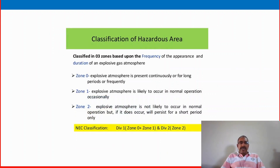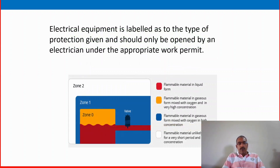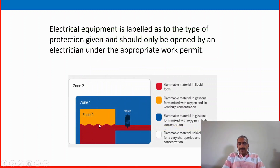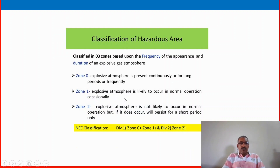Classification of hazardous areas: classified in 3 zones based upon the frequency of appearance and duration of an explosive gas atmosphere. Zone 0 — explosive atmosphere is present continuously for long periods. In Zone 0, explosive atmosphere is continuously available. Zone 1 — explosive atmosphere is likely to occur in normal operation or occasionally.